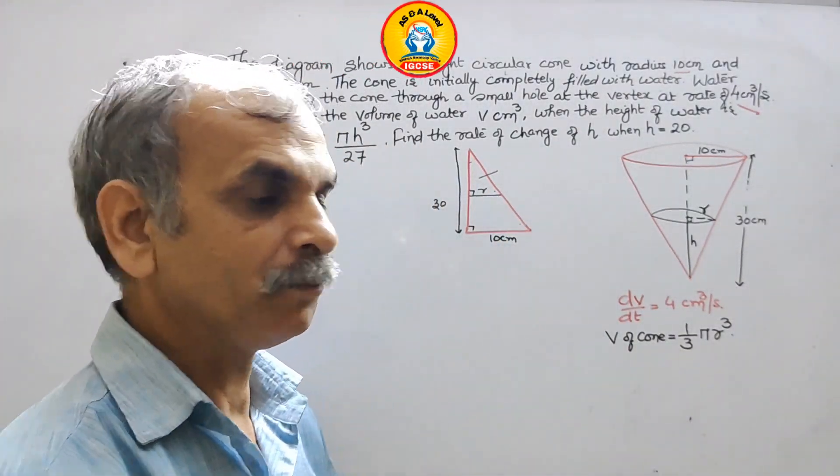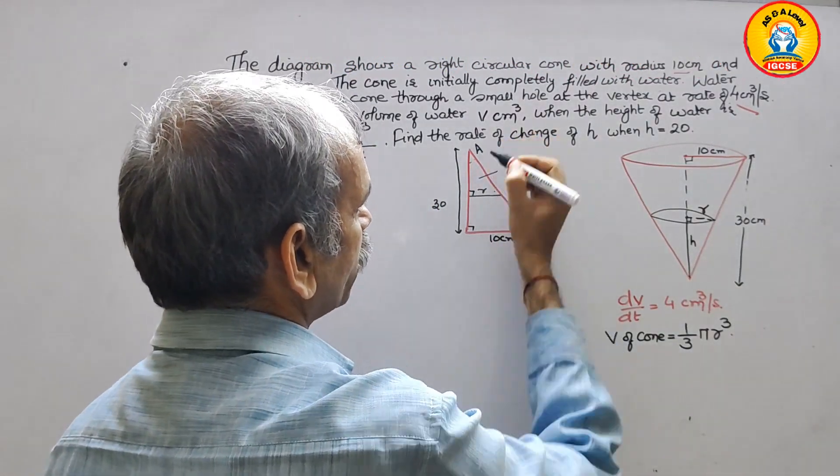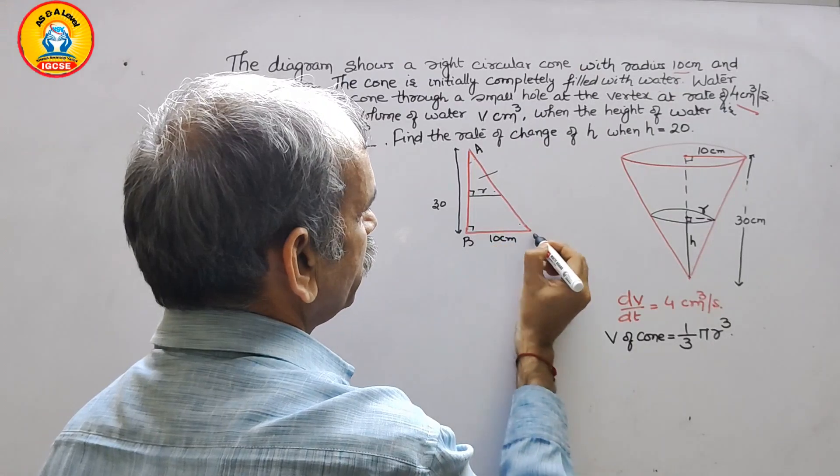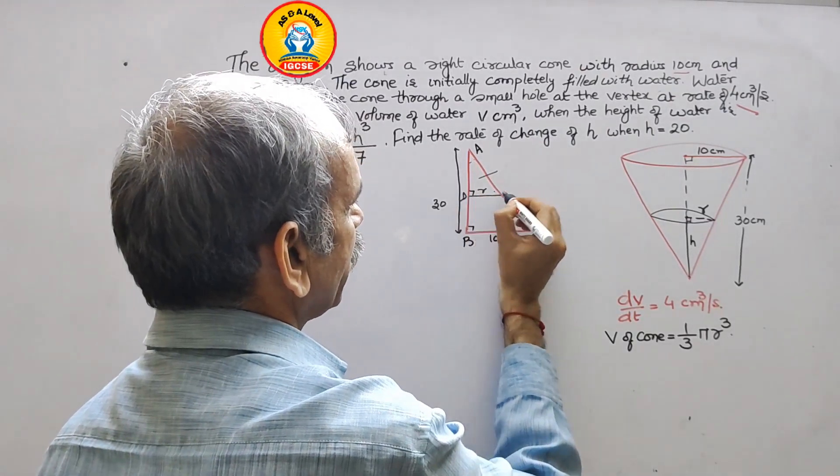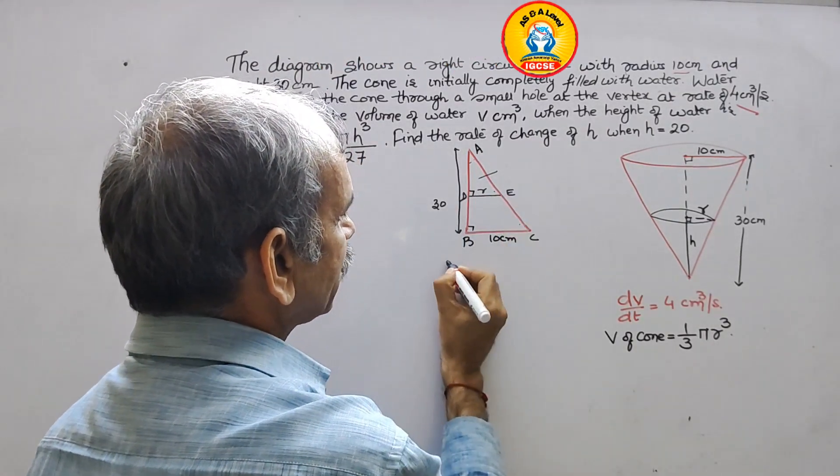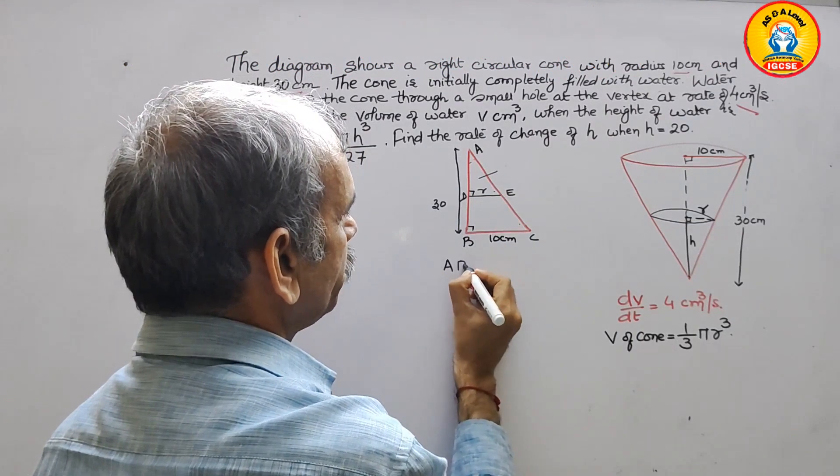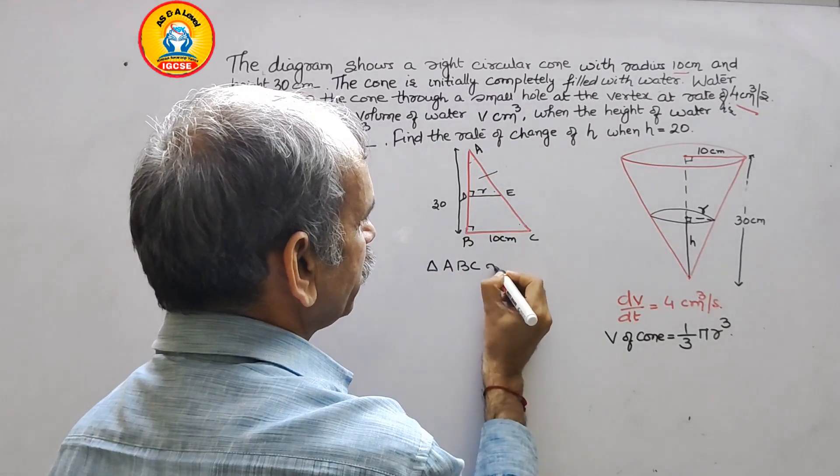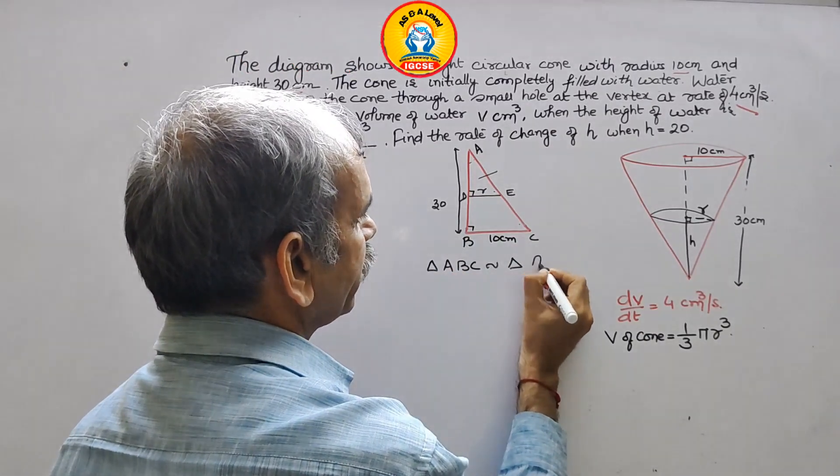So we can say this triangle and full big triangle is similar. If they are similar, so now just name them: this is your A, this is your B, C, D, and E. So we can say triangle ABC is similar to triangle ADE.